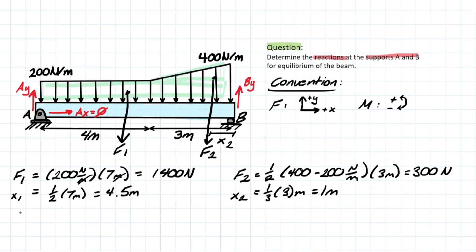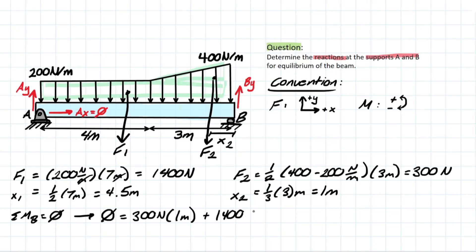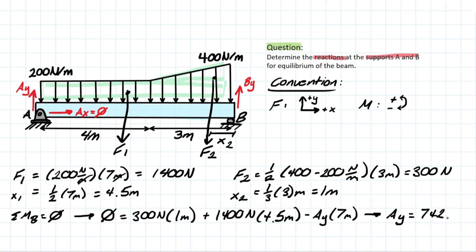Now we can solve the reactions at our supports. We take the summation of moments about B, equal to 0. F2 is 300 N going counterclockwise, so it's positive, and it's 1 meter away from the support. F1 is 1,400 N and is 4.5 meters away from that support. Ay acts over the full span of the beam, 7 meters, and is negative because it's in the opposite direction. Solving for Ay, we get 742.9 N.